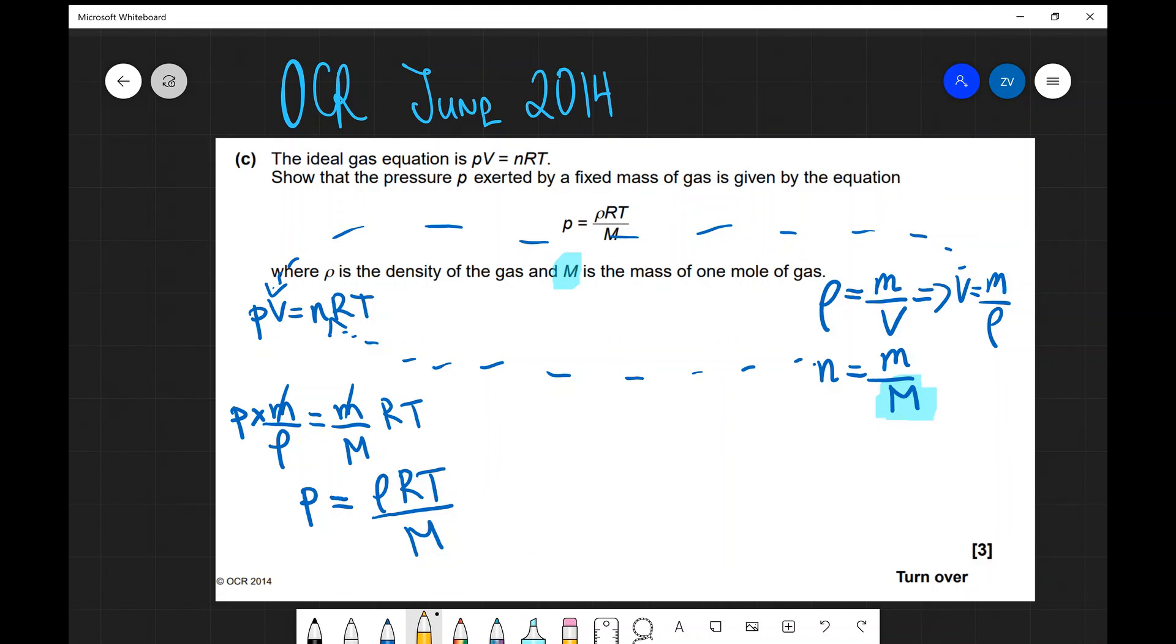If I remember correctly, the grade spread of this question would be: if you had the fact that density is mass over volume, you get a mark. If you have the equation for the number of moles, you get a mark. And if you've reached the final answer by doing this work, you get a mark. That was another example of using the ideal gas equation.